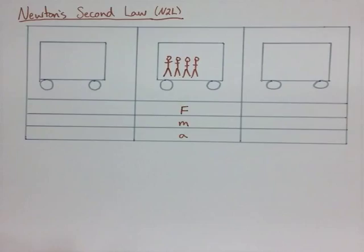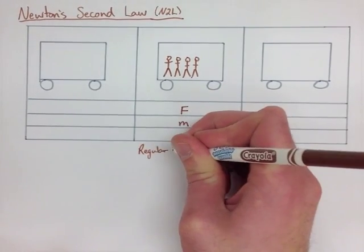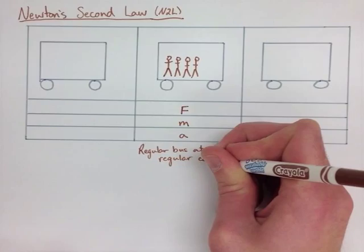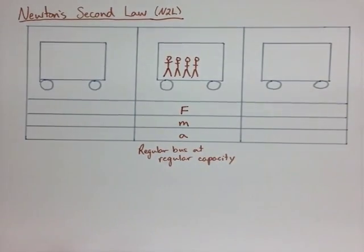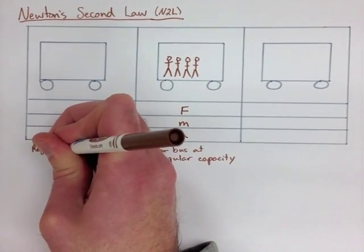First, let's say that we have a regular bus with regular capacity. We have F for force, M for mass, and A for acceleration. It's going to accelerate at some rate.